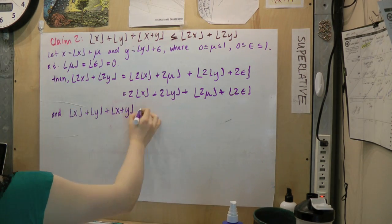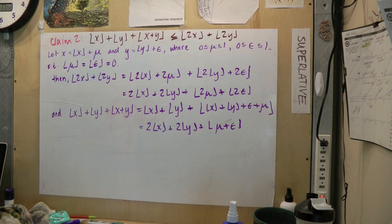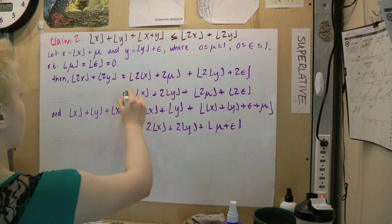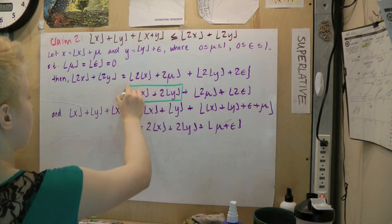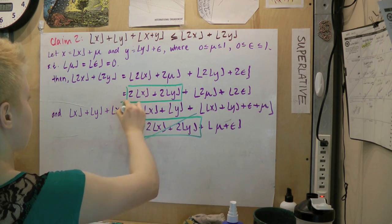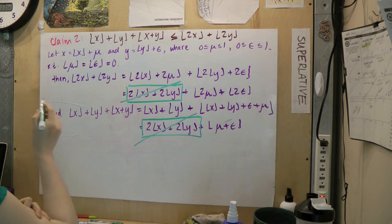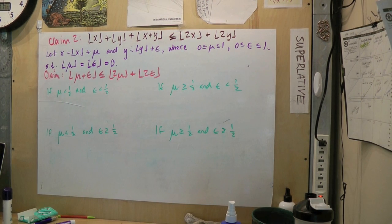And now we can expand the left side. We see that the expanded forms of both sides contain the terms 2 floor x plus 2 floor y. Subtracting these terms from our claim, we find that by proving that the floor of the sum of mu and epsilon is less than or equal to the sum of the floor of 2 mu and the floor of 2 epsilon, our original claim will be proven.